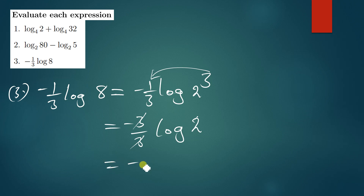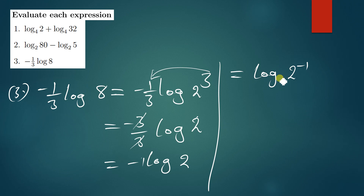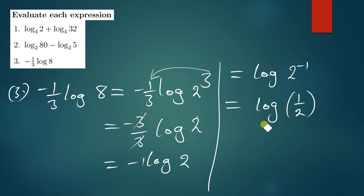When the negative 1 in front goes up as an exponent, we have log(2⁻¹) base 10, which can be written as log(1/2). Since this is already in base 10 and is not a special logarithm, we leave the answer as log(1/2).